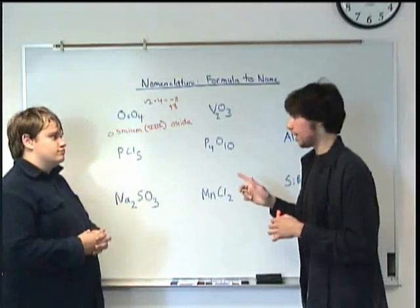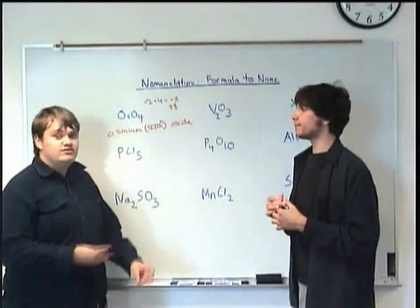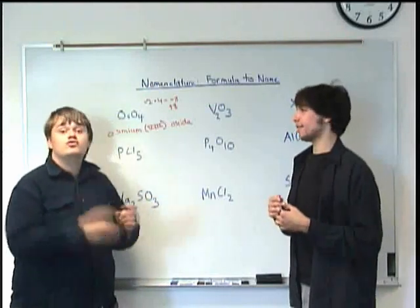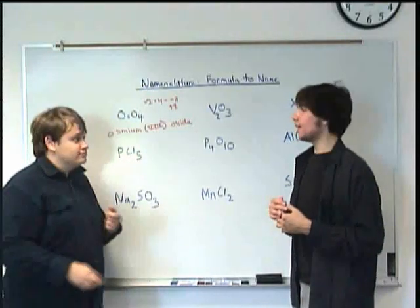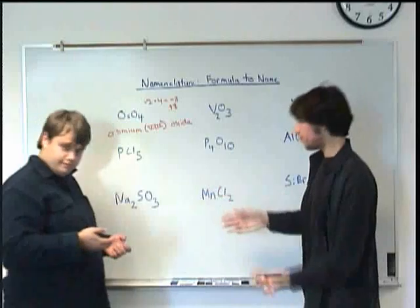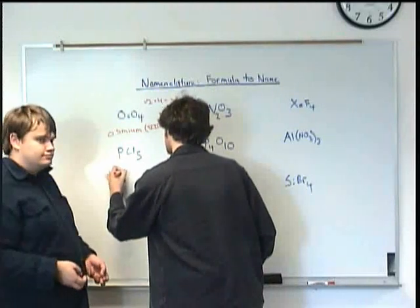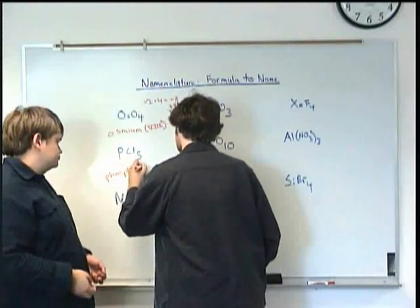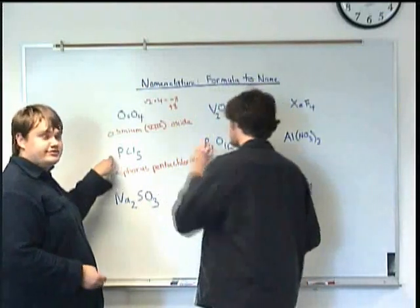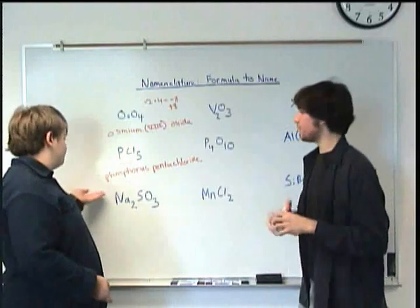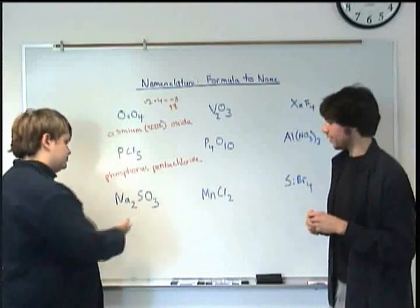What about if there's only one of the last one? What if it's like PCl? Well, with the second one, you have to put a prefix in front of that no matter what, even if there's only one. So if the Cl was just one, it'd be monochloride. So then for this one, we have 5-chlorides, that's penta. So I'm going to name this as phosphorus-penta-chloride. That's correct. This tells us that there's 1-phosphorus and 5-chlorines. That's pretty nifty.